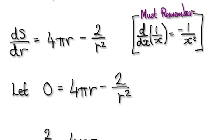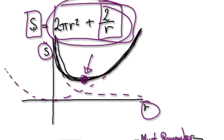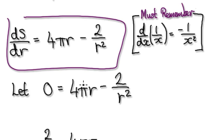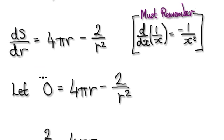Differentiate it, and it will give you dS/dr = 4πr - 2/r². Looking at the graph, we want to find where the gradient will be zero. So set this thing to zero.